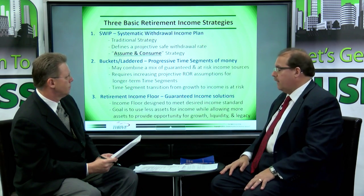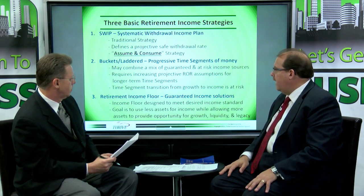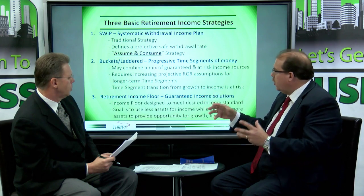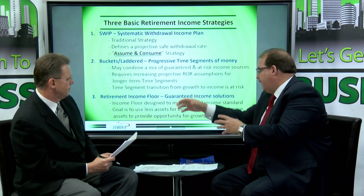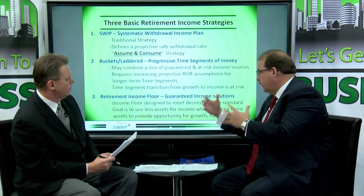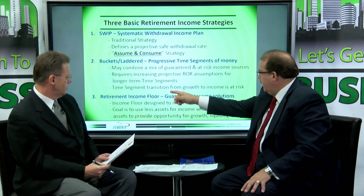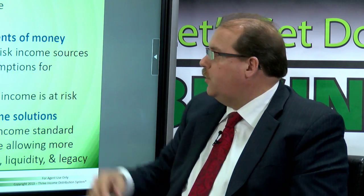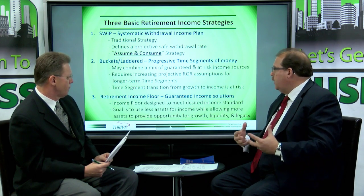The second strategy, which has become very popular over the last few years, is the bucket laddered progressive time segment of money — bucketizing and laddering buckets in progressive time segments. It could combine guarantees along with risk assets. However, it requires projective rate of return assumptions for the time segments, where I'm guaranteeing the front end. To accomplish my goals, there's a certain level of return I must achieve on the various buckets as they come closer to the time of income, then transition from growth into income. Until that transition, the money is certainly at risk.